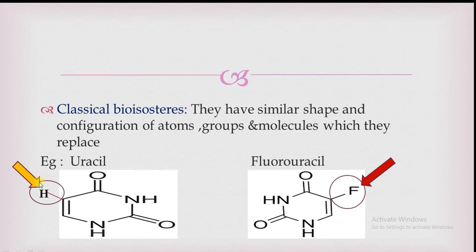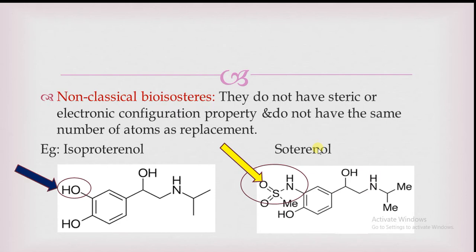When we replace this hydrogen atom at the fifth position with a fluorine atom, you can see that fluorine has been introduced in place of hydrogen. This is the structure of fluorouracil. Fluorouracil is showing better anti-neoplastic activity. This is how we can replace functional groups and increase biological activity compared to the previous biological response.